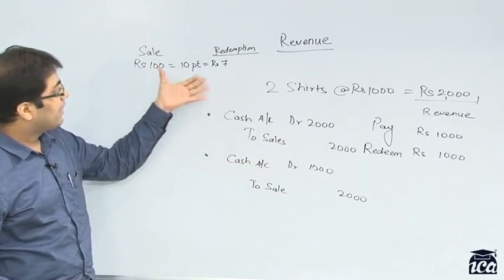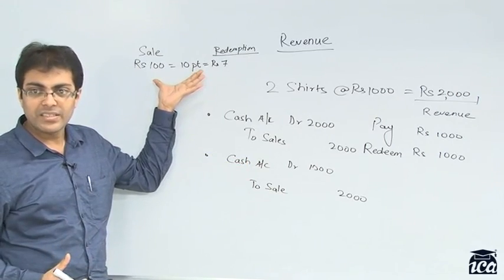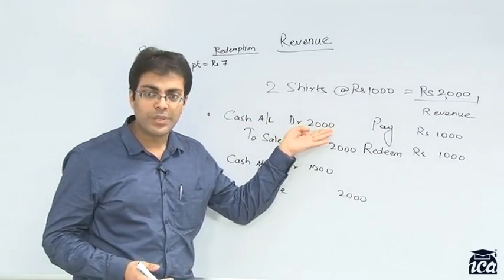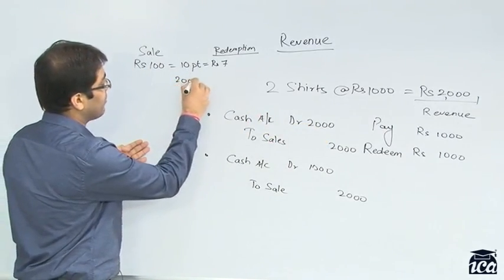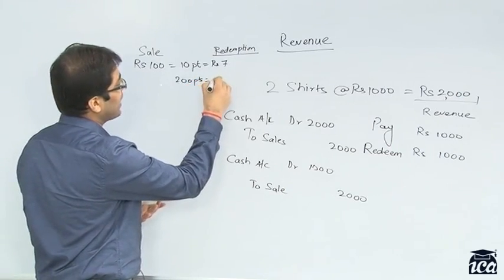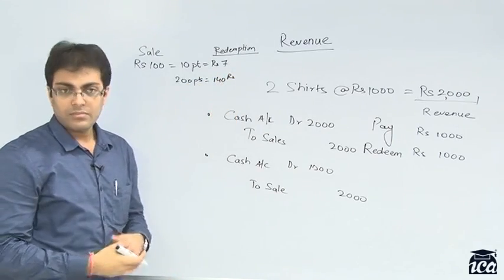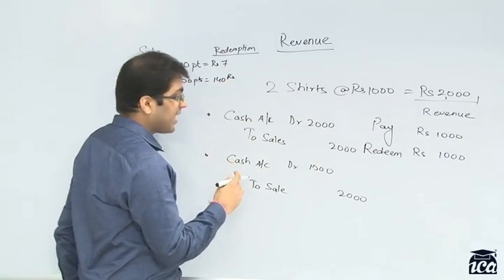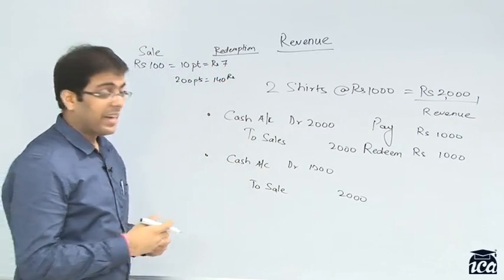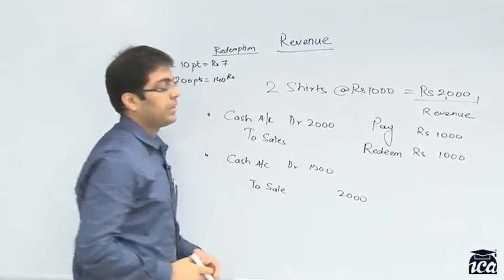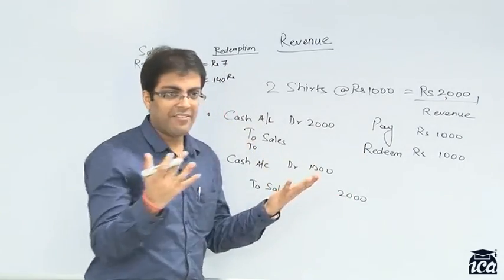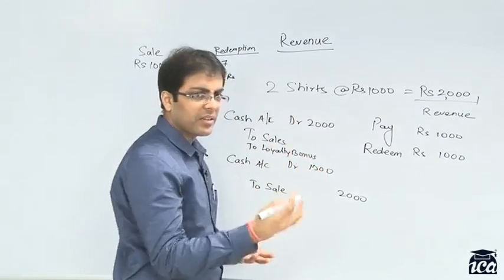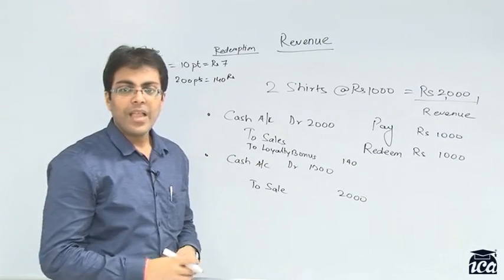So IFRS says that you need to, this is an identifiable component of sale, isn't it? Is this not an identifiable component of sale? I know that when I am selling goods worth rupees 2000, I am entering some points, which is going to be 200 points this time. For this 200 points, I know that I will be getting 140 rupees. 10 points is 7 rupees, 200. So 100 points is 70 rupees, 200 points is 140 rupees. So in this case, I should account for sales as an identifiable component.